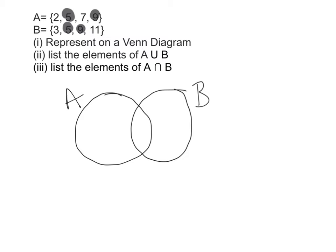They need to be filled in to the middle section of your Venn diagram, which is called the intersection. I'm going to write in the number 5 and the number 9.